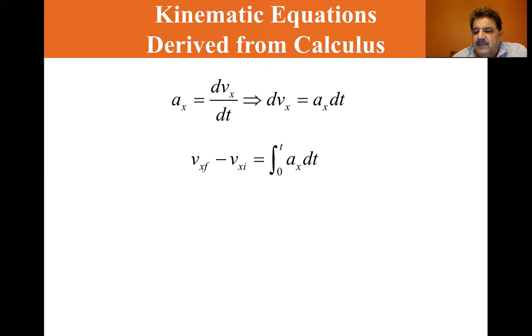For the special case where acceleration is constant, a_x can be removed from the integral and we get the particle under constant acceleration equation. If a_x is constant, it's not part of the integral. Vx final minus Vx initial equals the integral of a_x from 0 to t dt, and you end up with a_x times t.